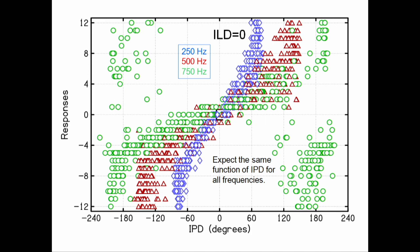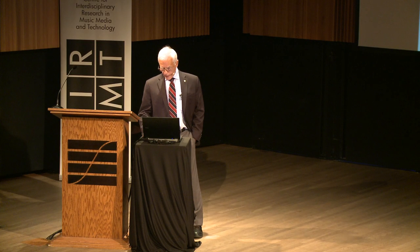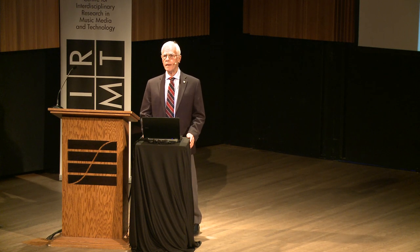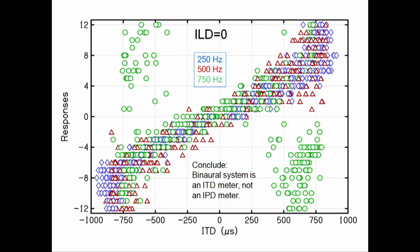If we try to set the interaural level difference equal to zero using our technique, and we look at listener responses for frequencies 250, 500, and 750 Hz, plotting those data against the interaural phase difference — if the binaural system really pays attention to interaural phase difference, these plots should coincide, and obviously they don't. On the other hand, if we take these same data and plot them against the interaural time difference, the plots coincide rather nicely. Consequently, we conclude that the binaural system is really an interaural time difference meter and not an interaural phase difference meter.